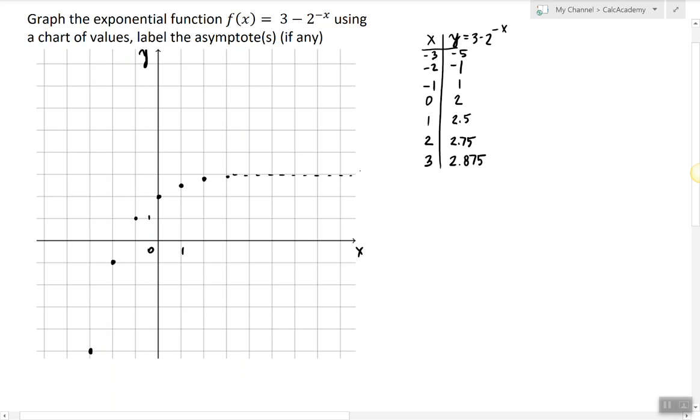So we call that such behavior an asymptotic behavior and here we have a horizontal asymptote y equals 3.